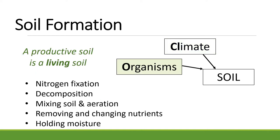The second factor is organisms — they're really important. Remember, a productive soil is a living soil; you have to have living organisms to make really productive soil. One of the most important things organisms do is fix nitrogen. Nitrogen in the air is in the N₂ form, and fixation is the process where N₂ is turned into ammonia, NH₃. Ammonia is useful to plants — it's an inorganic form of nitrogen that can be used by plants and other organisms in the soil. Plants like legumes have a microbial relationship with microbes on their roots that create nodules, and those nodules and microbes are able to take N₂ and turn it into NH₃.